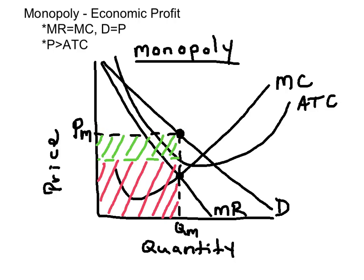The area of total economic cost is represented by the red region — that's the area underneath the economic profit. When you put the total economic cost and total economic profit together, you get the firm's total revenue.